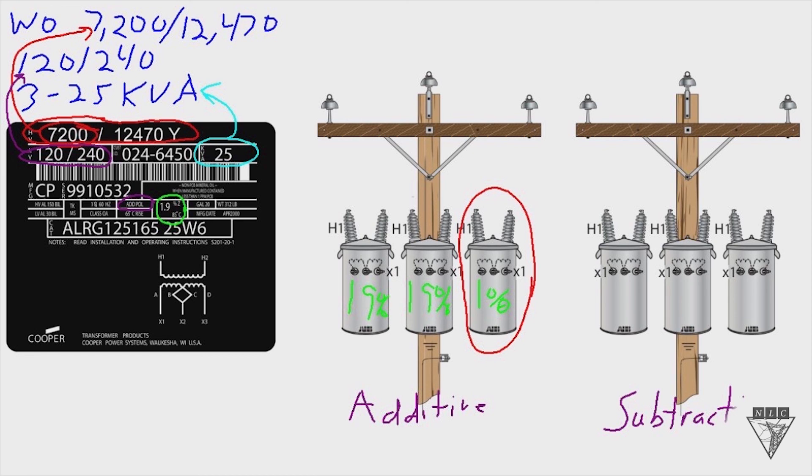Okay, so that's the criteria for choosing the right transformers, single phase transformers when banking or paralleling transformers. You need to know the circuit voltage, the service voltage, the size transformers you need, and then try and get the polarity to match and try and get the impedance as close as possible for all three.